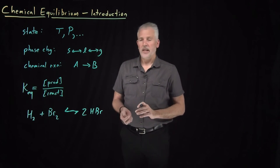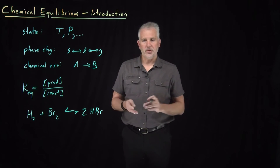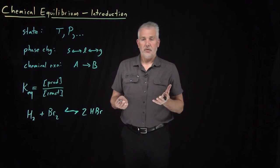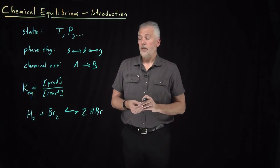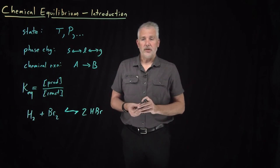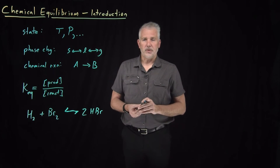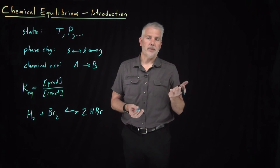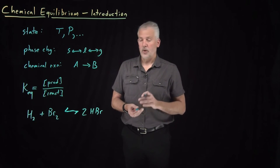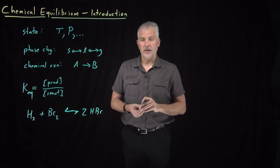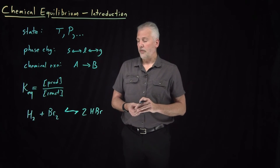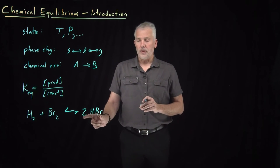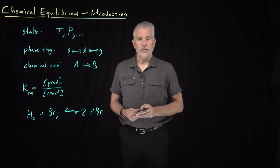We can say, using language we've developed in different portions of the course, surely the reason the reaction only proceeds partway is because from a probabilistic point of view, that's more probable than any other outcome. Or if we want to phrase that in terms of thermodynamics, we have a couple different ways of talking about that. We could say that that's the outcome that maximizes the entropy of the universe, or that's the outcome that minimizes the free energy of the system. Or if we want to use chemical potential, we could say the chemical potential is equal for the products and the reactants when we reach equilibrium.